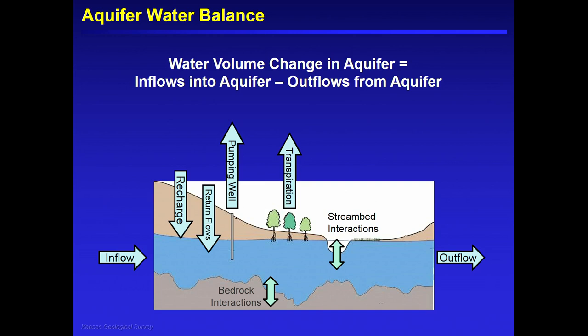They recognize that things are going south in the Western High Plains — the High Plains aquifer in Western Kansas. They would like to extend the lifespan of the resource. They've got one choice because there's no surface water to be had in Western Kansas — we've dried up all the rivers. So the one choice is to reduce pumping. How much do they need to reduce to have a significant impact on decline rates?